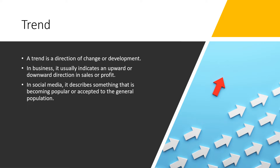What is a trend? A trend is a direction of change or development. In business, it usually indicates an upward or downward direction in sales or profit. In social media, it describes something that is becoming popular or accepted to the general population.